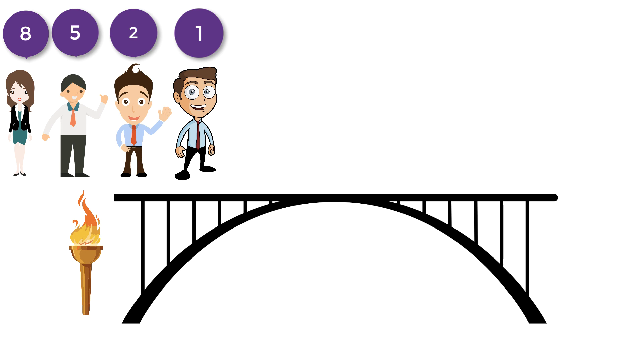C takes five minutes to cross the bridge and D takes eight minutes to cross the bridge. There is only one torch with them and the bridge cannot be crossed without the torch. There cannot be more than two persons on the bridge at any time.